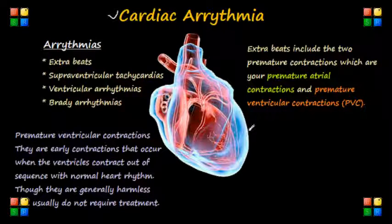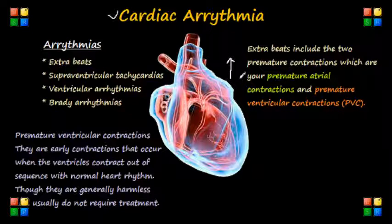A heartbeat that is too fast, which is usually above 100 beats per minute in adults, is called tachycardia. And a heartbeat that is too slow, that is below 60 beats per minute, is called bradycardia.